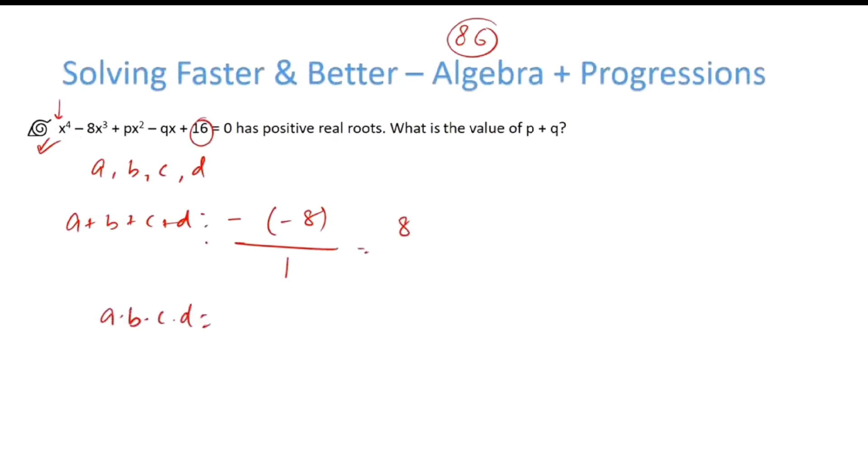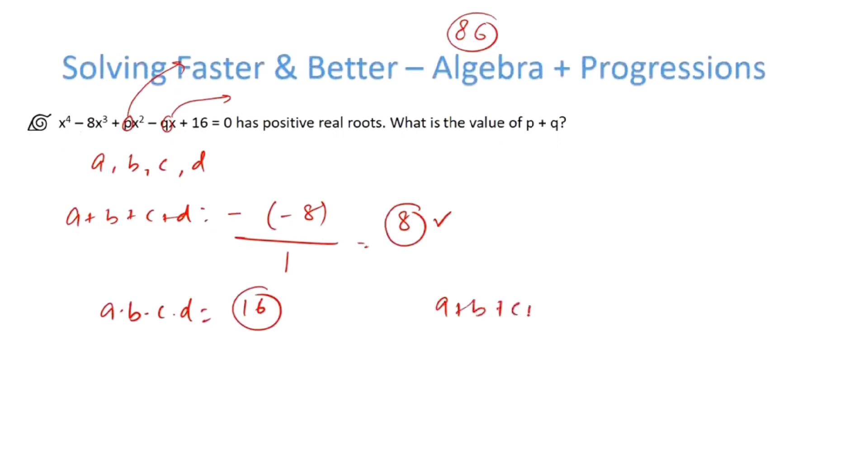Similarly, the product of all the roots will be equal to 16. p represents the sum of product of two roots at a time, and q represents the sum of product of three roots at a time.